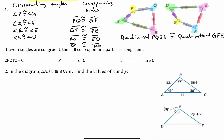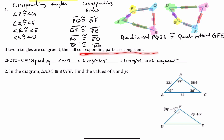CPCTC stands for Corresponding Parts of Congruent Triangles are Congruent. So if two triangles or polygons are congruent, then all corresponding parts are congruent.